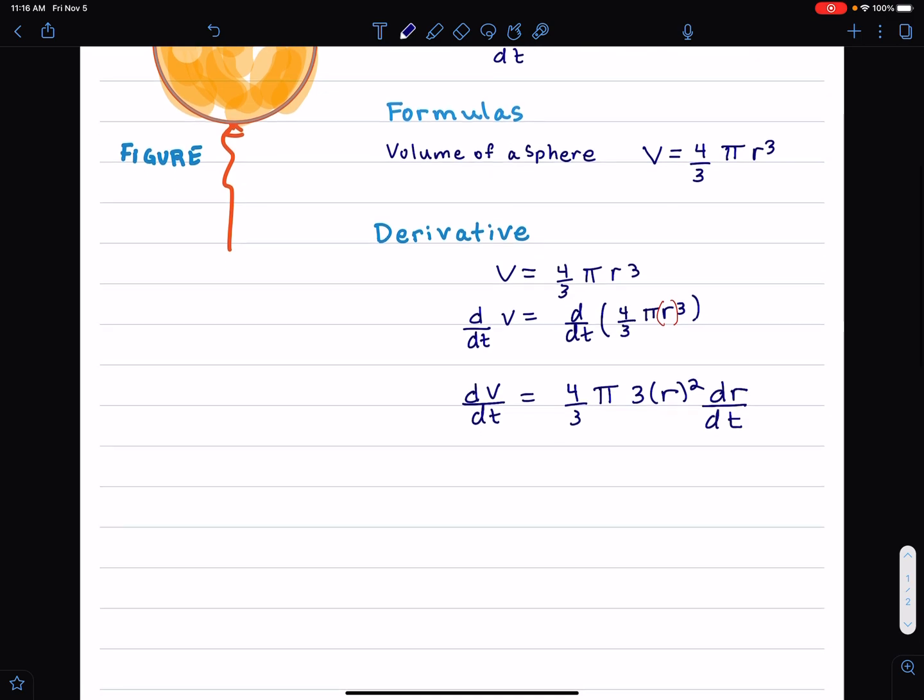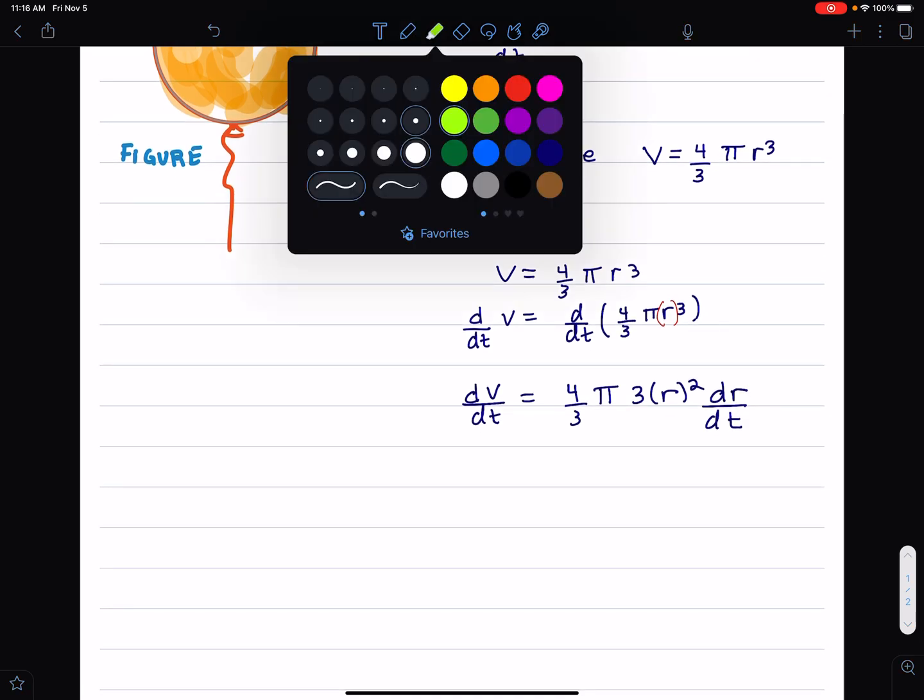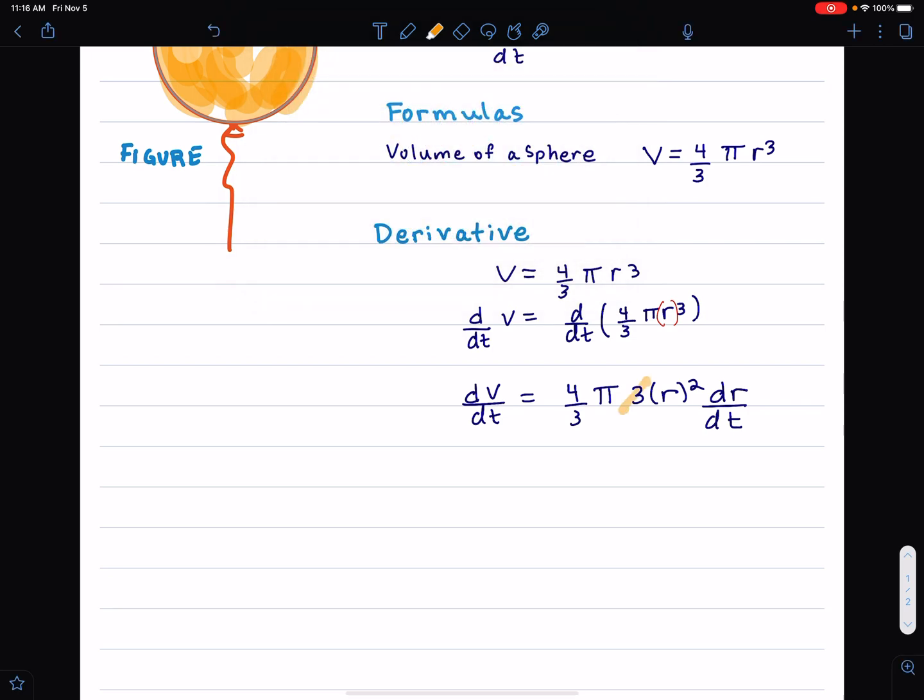By the way, sometimes I just use the prime notation. That seems like, why not? You can use prime notation. Those cancel out, so you could write v prime equals 4 pi r squared dr/dt.